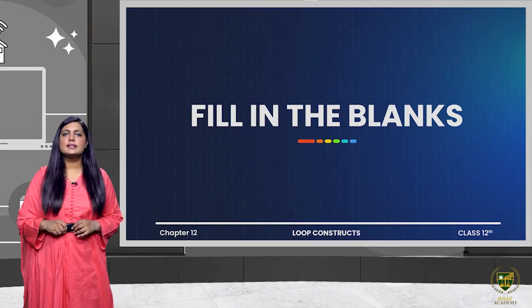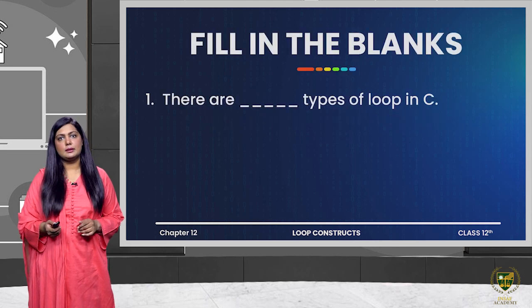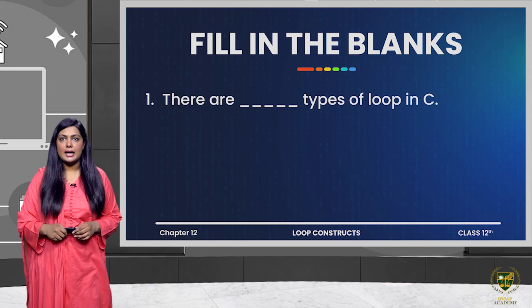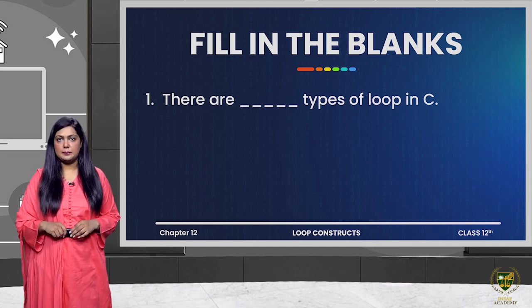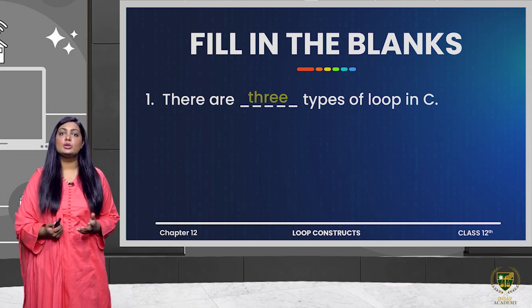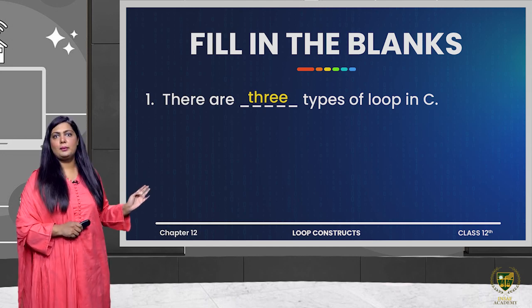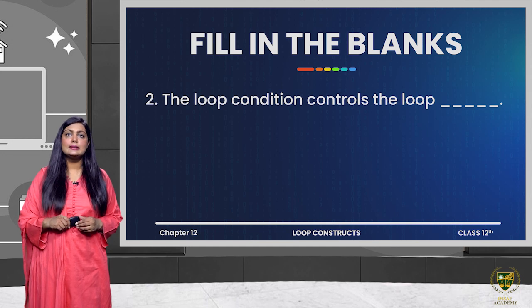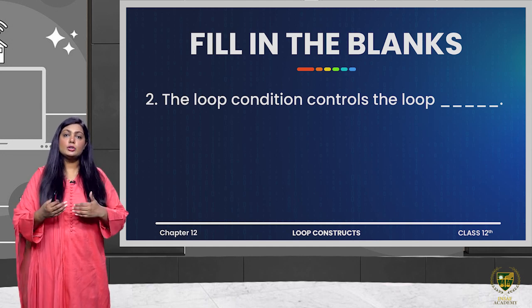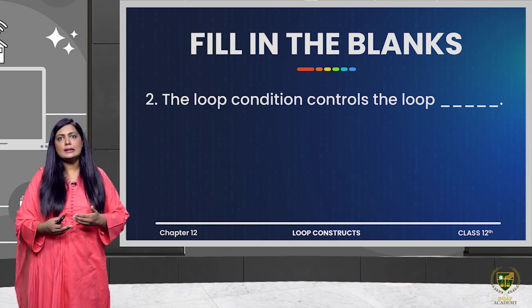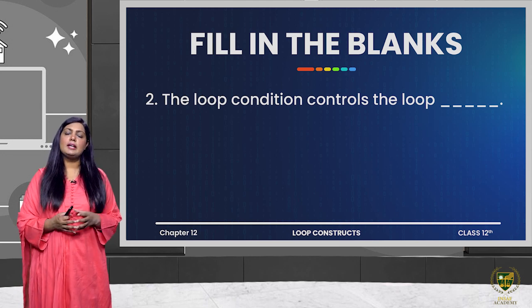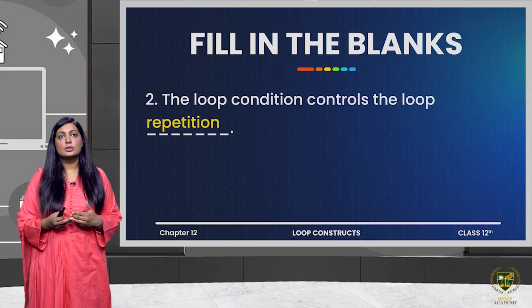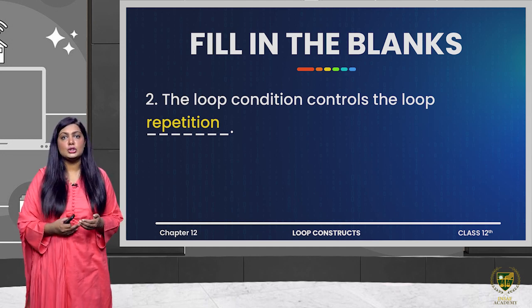We are starting with the first question which is fill in the blanks. The first question is: there are dash types of loops in C. We already know that there are three types of loops in C: for loop, while loop, and do-while loop. The loop condition controls the loop.